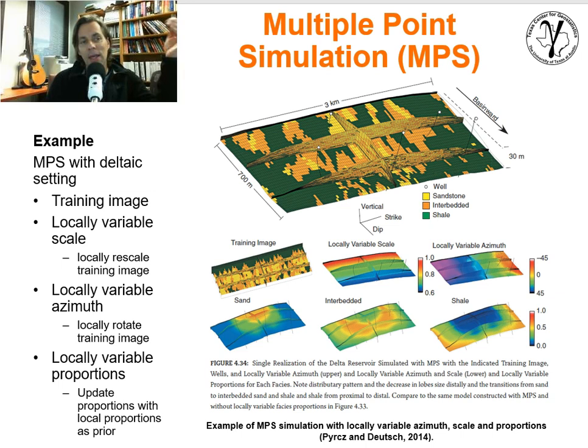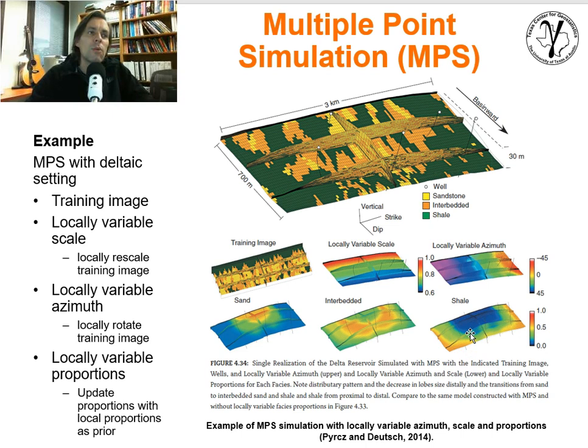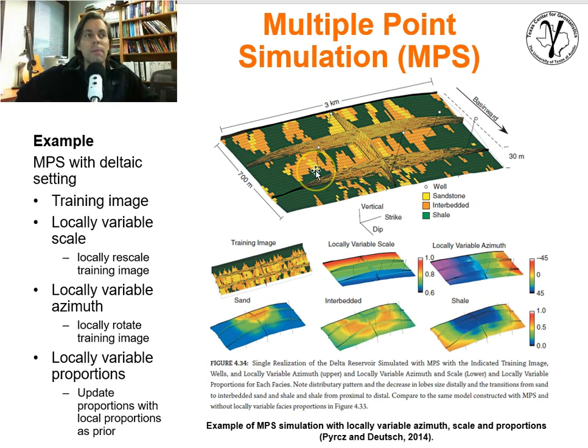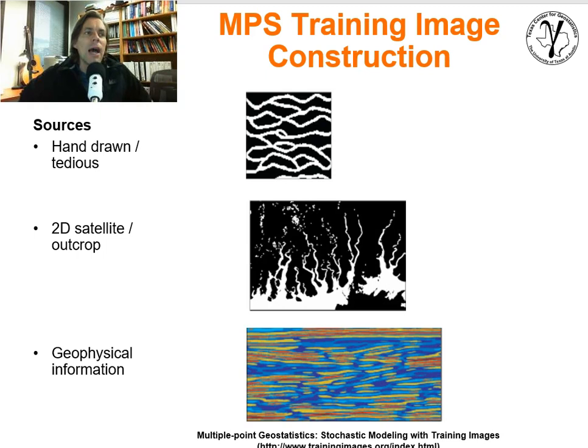We could get much more complicated, combining locally variable azimuth, locally variable scales, and locally variable proportions of sand, interbedded, and shale — like we did with the deltaic indicator-based simulation. We're getting to the point where we have so many constraints that the model can get a bit noisy. Individual constraints might be hard to see, and I personally think we could be reaching a point where we're starting to lose some of the geometric information when trying to reproduce so many different trends and locally variable scales and azimuths all at once.